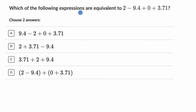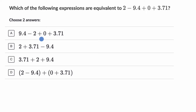We're asked which of the following expressions are equivalent to two minus 9.4 plus zero plus 3.71. We need to pick two answers. Pause this video and see if you can have a go at it before we do this together. Now let's look through the choices.